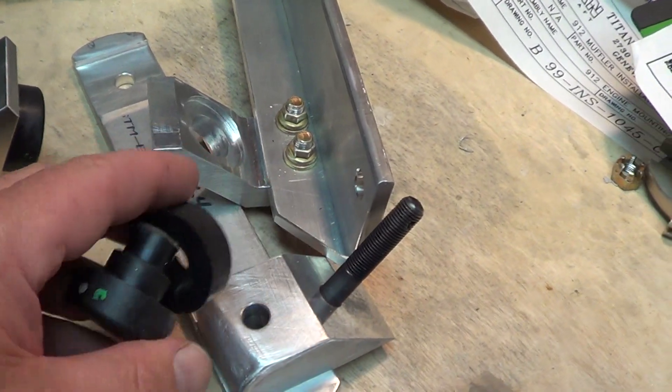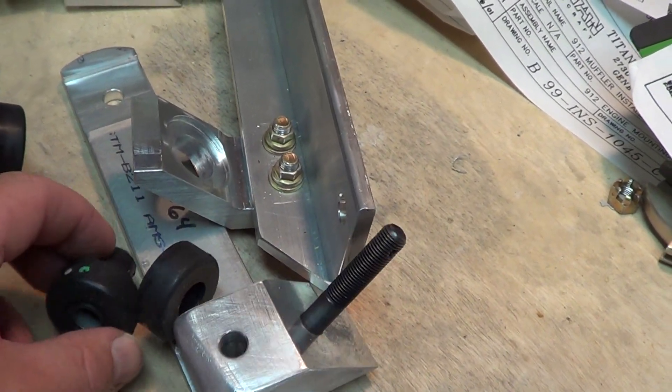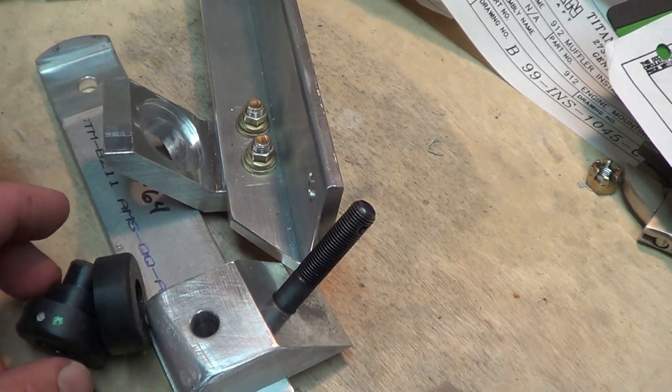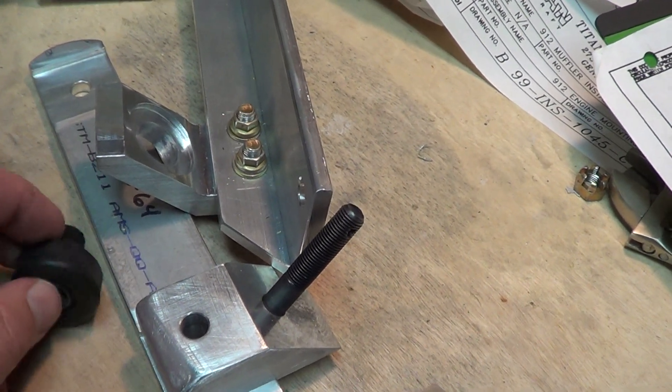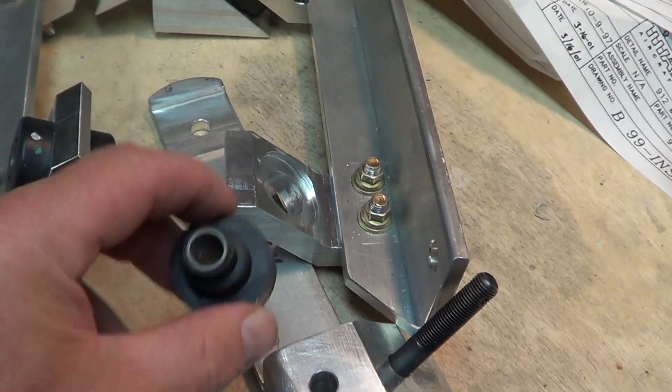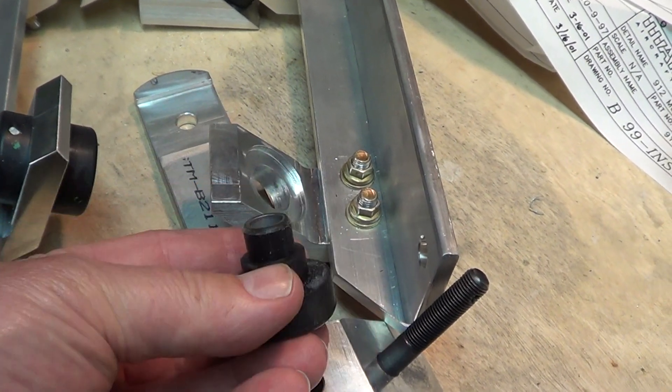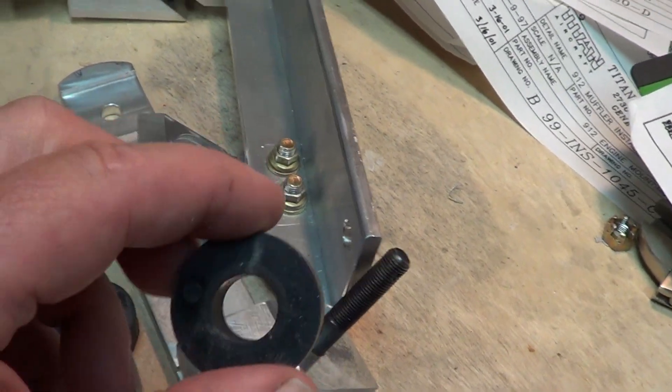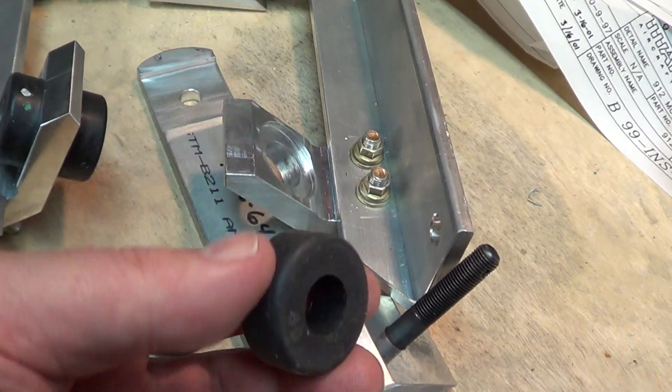So I'm working on the engine mounts here and I'm not sure how to orient these rubber bushings. One contains the steel bushing inside, runs right through, and the other is just the other side of it.